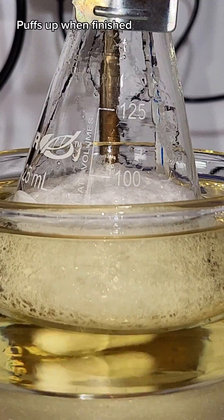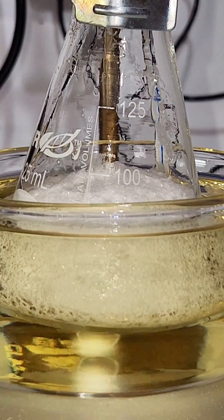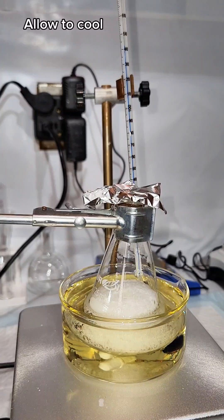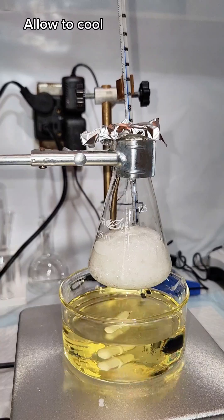The result is pretty much pure phthalamide, which puffs up when it's done. At that point, I remove the Erlenmeyer flask from the oil bath and allow it to cool for a while.